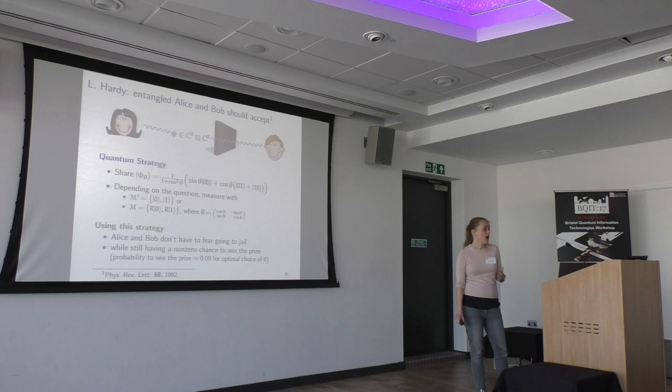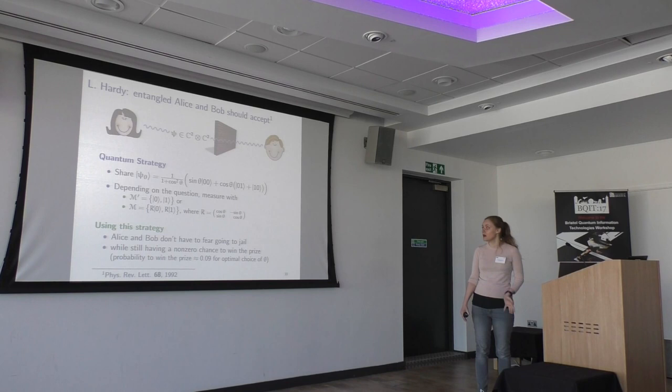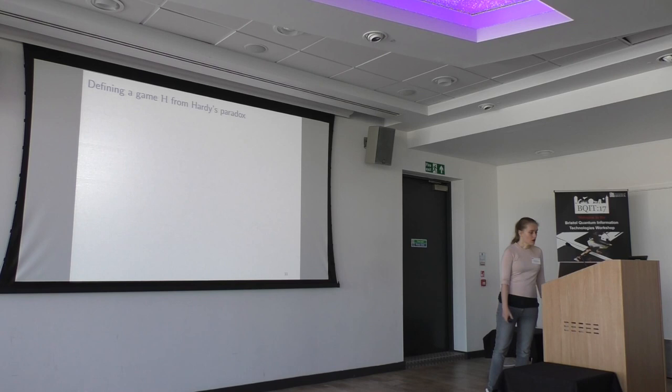We could optimize their chances of winning by optimizing theta. But with this setup, we cannot test arbitrarily high dimensions because Alice and Bob already could do as well as they can simply by using two qubits.